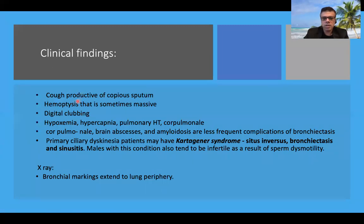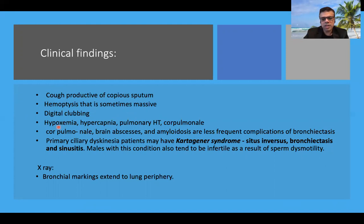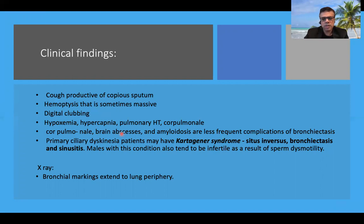Clinical findings include a cough productive of copious sputum as the characteristic feature. Hemoptysis may also occur and can be massive. Digital clubbing and signs of hypoxemia are seen. Hypercapnia due to decreased ventilation can develop, pulmonary hypertension may follow, and ultimately it may lead to right heart failure — that is cor pulmonale.